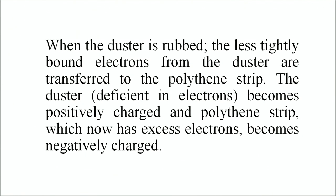When the duster is rubbed, the less tightly bound electrons from the duster are transferred to the polythene strip. The duster, now deficient in electrons, becomes positively charged, and the polythene strip, now with excess electrons, becomes negatively charged.